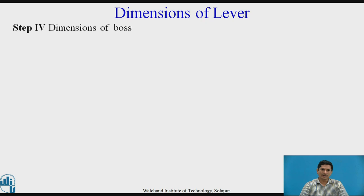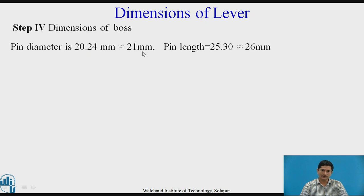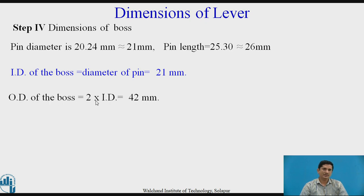Then the lever dimension, the dimension of the boss. Pin dimension is 20.24, let us take it as 21. Pin length is 25.30, let us take it as 26, round it off. Inner diameter of the boss equals diameter of the pin, 21. Outer diameter of the boss equals 2 times the ID, it is 42. Length of the boss equals length of the pin, which is equal to 26 mm.